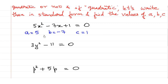In simple words, whatever number is written before x² — here it is 5 — that is the value of a. Whatever is written before x, including the sign, the value of b is negative 7. And whatever is the constant term which does not have any variable — here it is positive 1 — so we should take into consideration the plus sign. The values of a, b, and c are 5, minus 7, and 1.